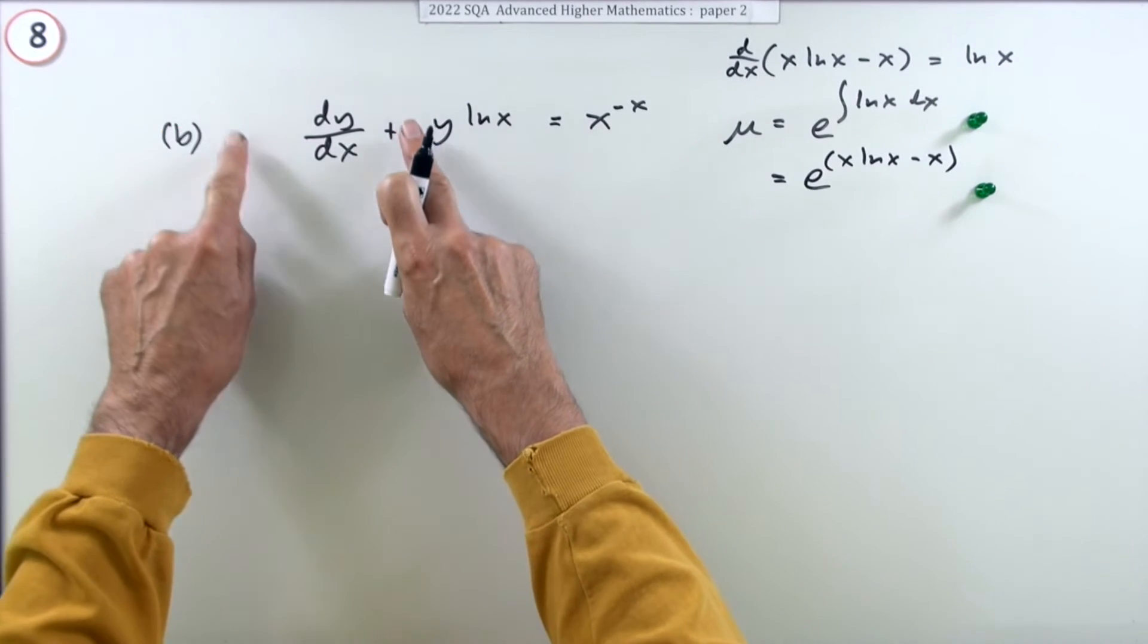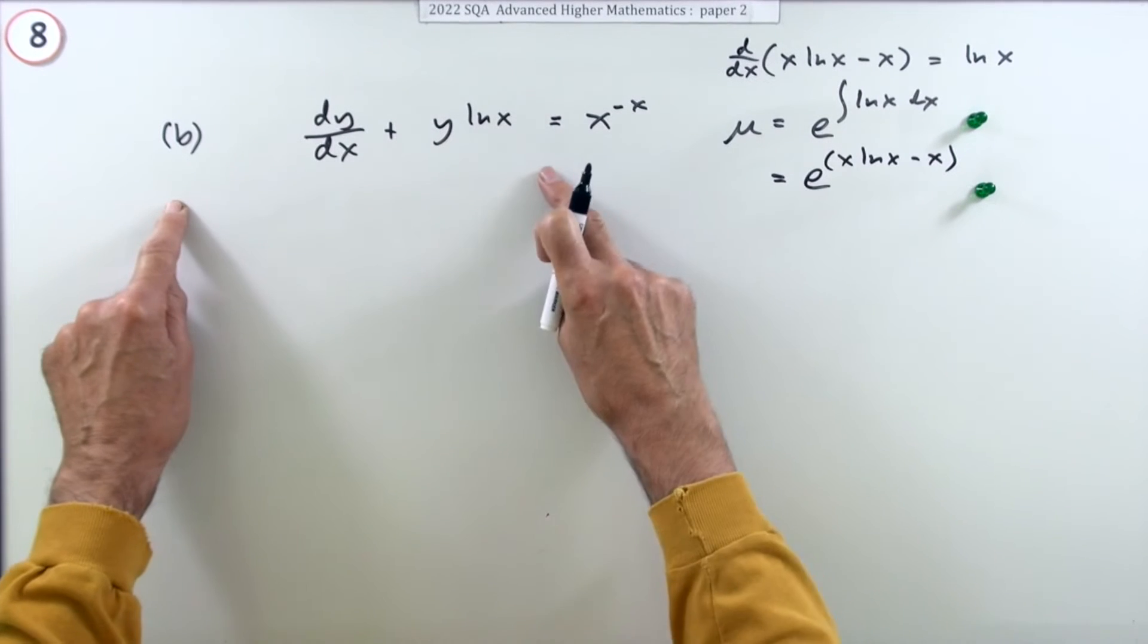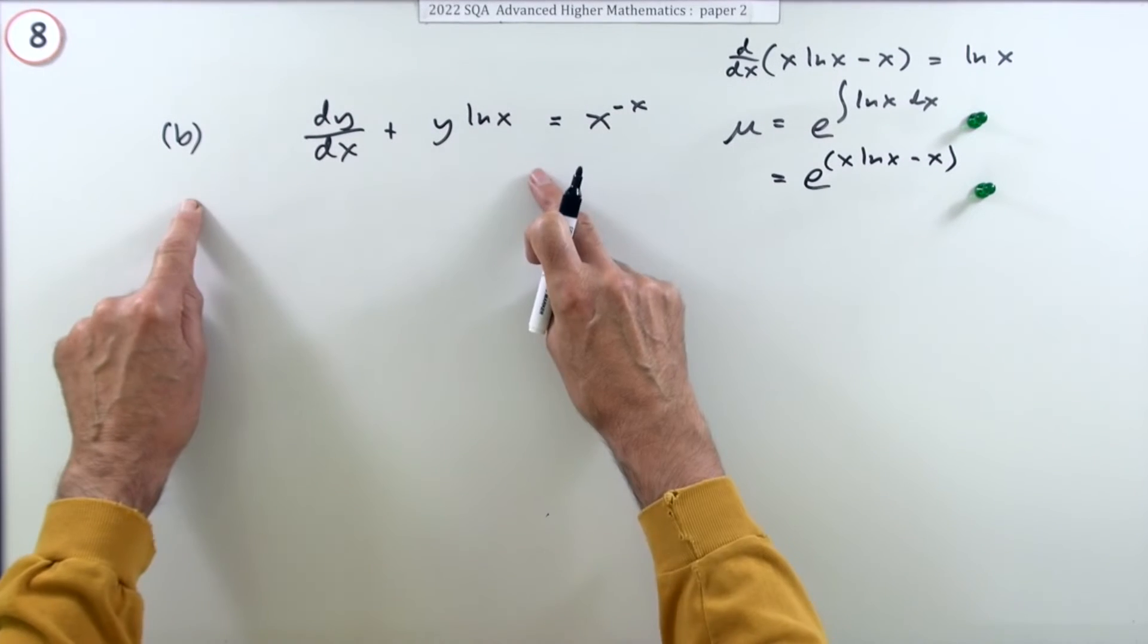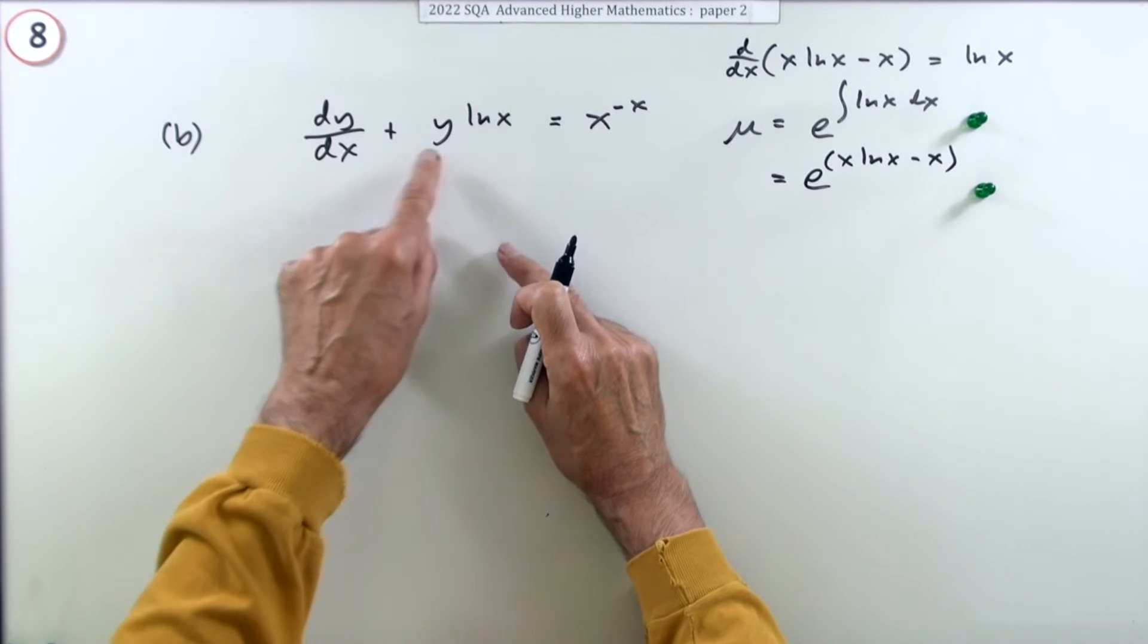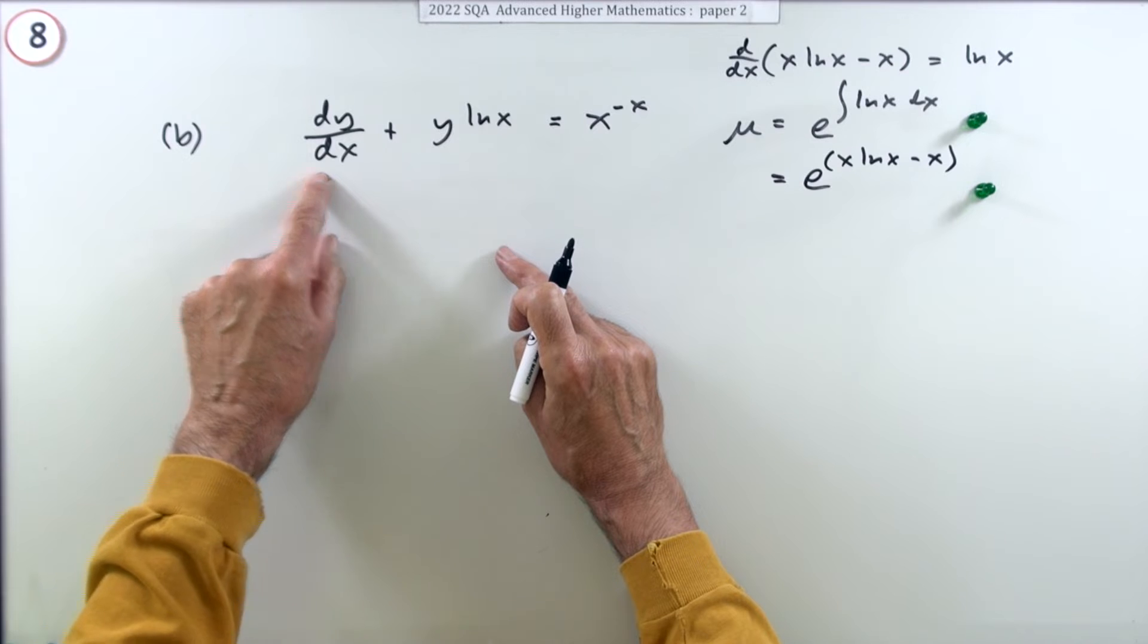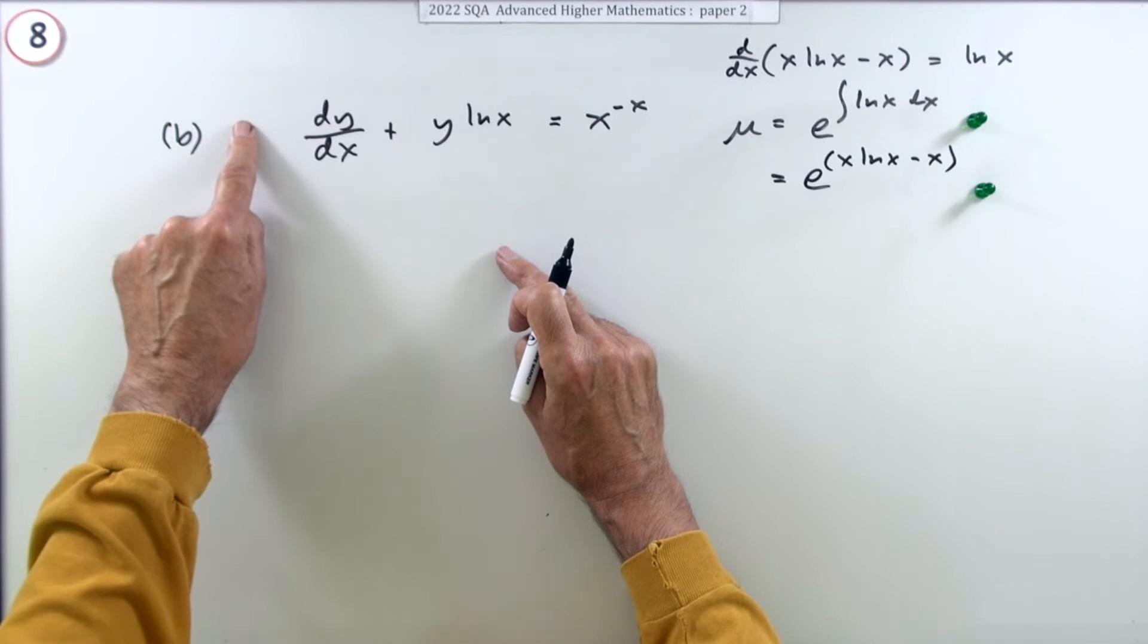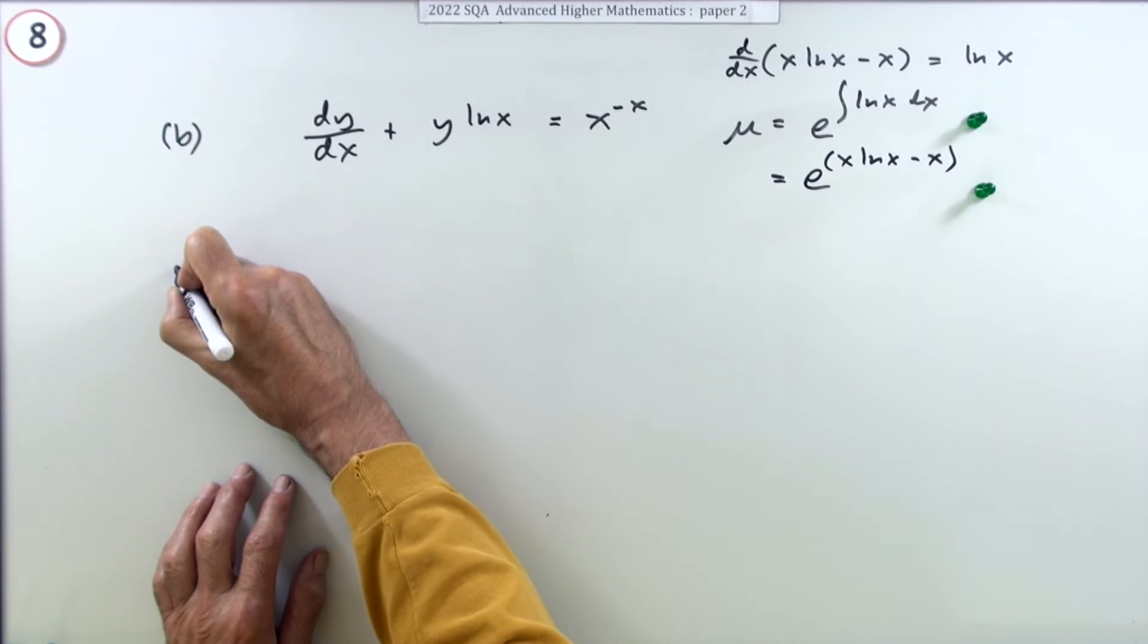You want to find something you can multiply these two terms by that will result in an exact derivative, that will result in the derivative you would get using the product rule. Because look, you've got the two parts: there's y on its own, there's y differentiated. So this would be the function of x and this should be its derivative over here. Now multiplying by this does exactly that.